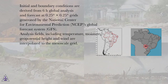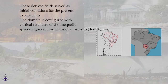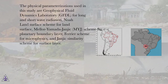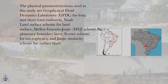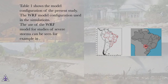Analysis fields including temperature, moisture, geopotential height, and wind are interpolated to the mesoscale grid. These derived fields served as initial conditions for the present experiments. The domain is configured with a vertical structure of 38 unequally spaced sigma (non-dimensional pressure) levels. The physical parameterizations used in this study are: Geophysical Fluid Dynamics Laboratory (GFDL) for long and short wave radiation, NOAA Land Surface Scheme for land surface, Mellor-Yamada-Janjić (MYJ) Scheme for Planetary Boundary Layer, Ferrier Scheme for microphysics, and Janjić Similarity Scheme for surface layer.